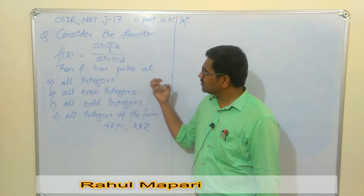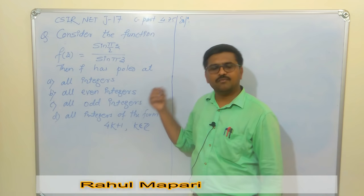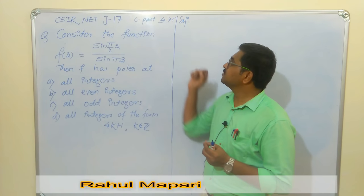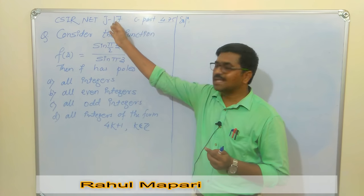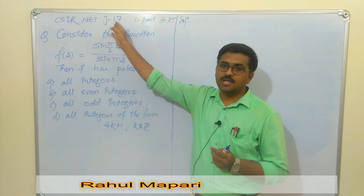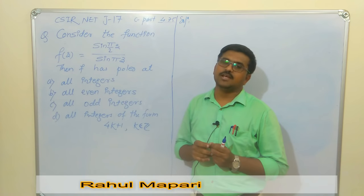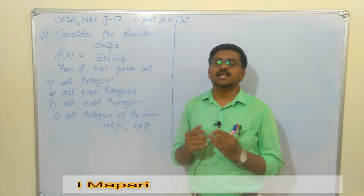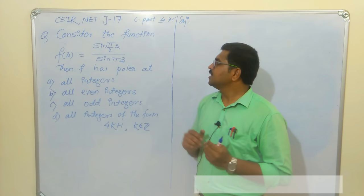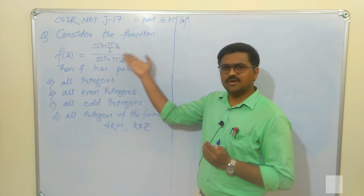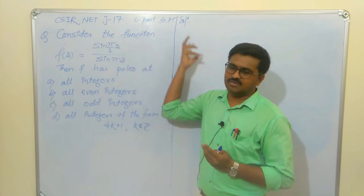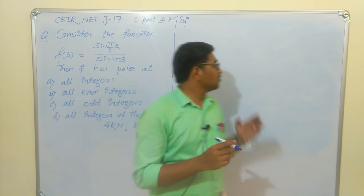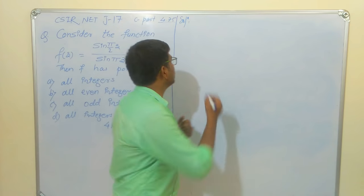The question asks about poles — at which points are the poles? Even though this seems simple for a C part question, and it appears in June 2017, I felt it necessary to discuss, because there are no major mistakes here but silly mistakes are possible. So we will find the singular points and then check against the options.